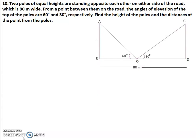This is the figure for the tenth question. You can see two poles: the first pole is AB and the second pole is CD, standing opposite each other on either side of the road. BD is the road and the length of BD is 80 meters. From a point O between them, the angle of elevation to see the top of AB, that is point A, is 60 degrees. And to see the top of pole CD, that is point C, the angle of elevation is 30 degrees.